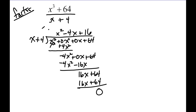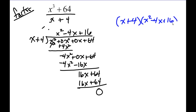So the final step, since we are factoring, is to write the two factors. One of the factors is our divisor: x plus 4 — one factor will always be the cube root of the two terms. And then the other factor is our quotient that we found, which is x squared minus 4x plus 16. By doing that, you have just factored x cubed plus 64.